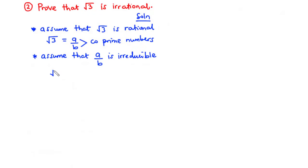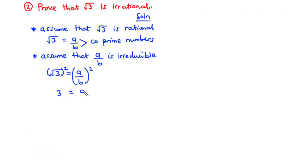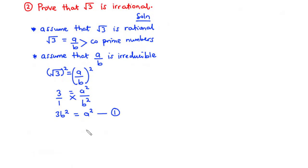We have the square root of 3 equals a over b. Now, let's square both sides of the equation so that we have 3 equals a squared divided by b squared. Then we cross multiply and we have 3b squared equals a squared. Let's call this equation 1.